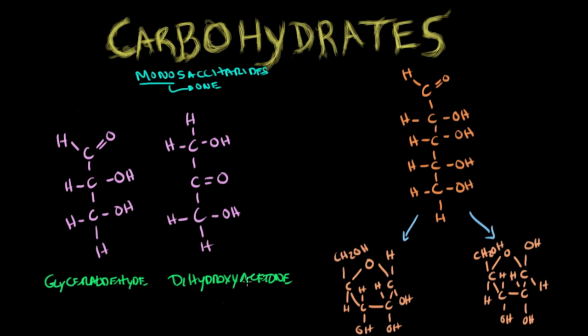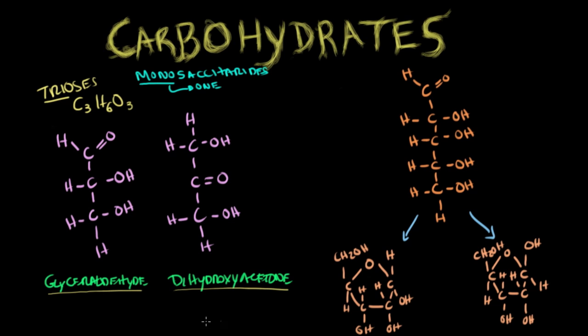The monosaccharides on the left are called trioses. Tri means three carbons, and using the formula, for every three carbons you'll have six hydrogens and three oxygen atoms. Both of these molecules, even though different, have the same number of carbon, hydrogen, and oxygen atoms. This one is called glyceraldehyde and this one here is dihydroxyacetone — complex names for very simple molecules.